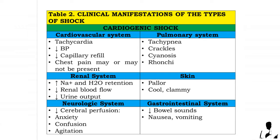Tachycardia, hypertension, decreased capillary refill, and chest pain — but chest pain may or may not be present. Pulmonary system: tachypnea, crackles, cyanosis, and rhonchi. Renal system: increased sodium and water retention, decreased renal blood flow, and decreased urine output.